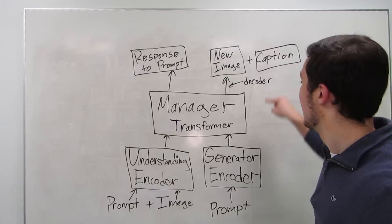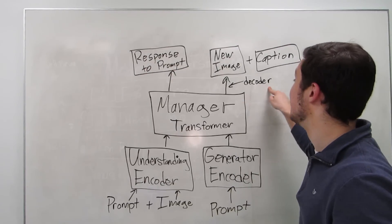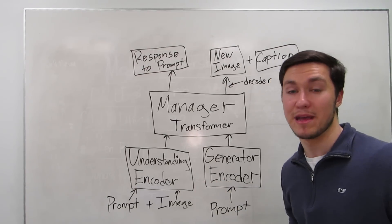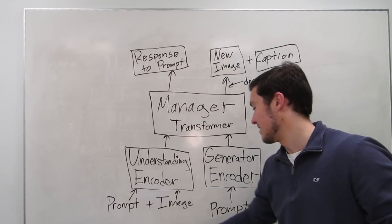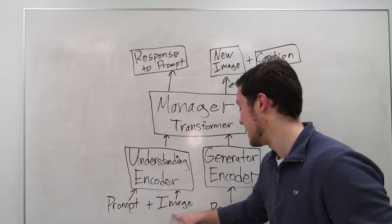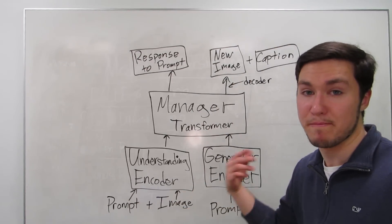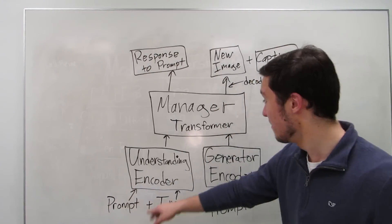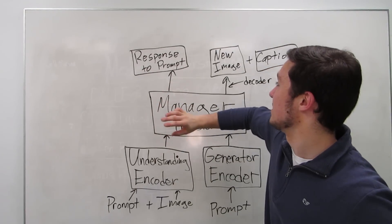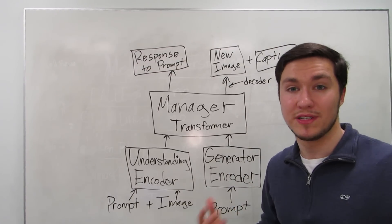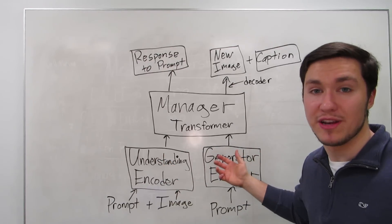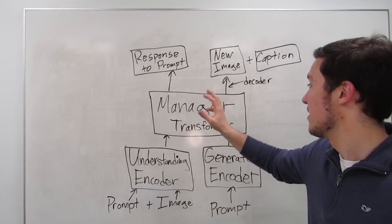So it's doing text to image to text, and a small technical detail is that it also uses a decoder to convert the tokens back into an image format. On the other hand, if you're trying to understand an image, you give the manager transformer a prompt and an image, which feeds into the understanding encoder. The understanding encoder analyzes both the prompt and the image — extracting the spark-notes of the image and the key parts of the prompt — then feeds those understanding tokens back to the manager transformer to output a response. What Janus Pro does that other models can't is separate understanding from generation and delegate both from a single manager.